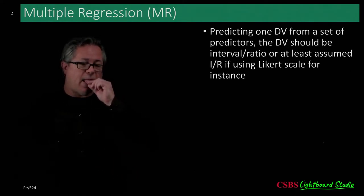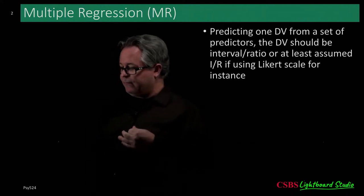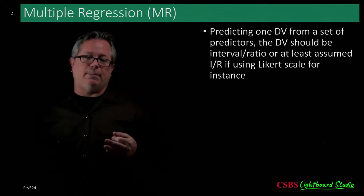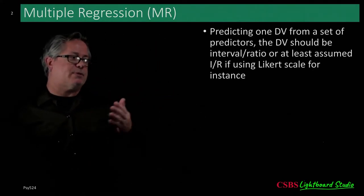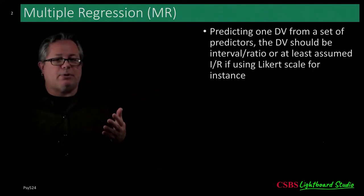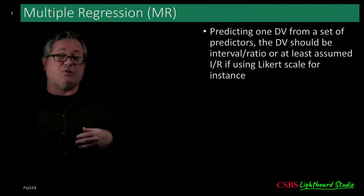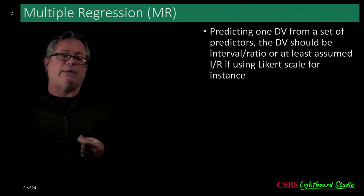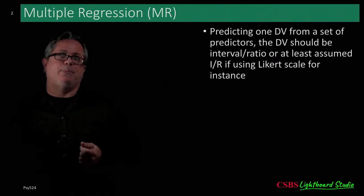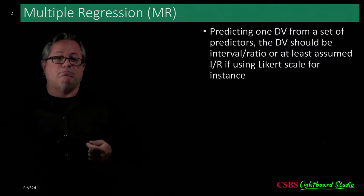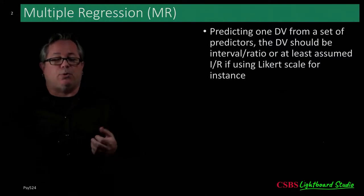As predictors start to overlap and predict the same variance in the outcome, they start to become less useful — potentially making the model not very predictive of the dependent variable.